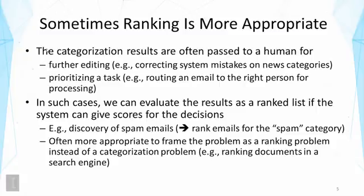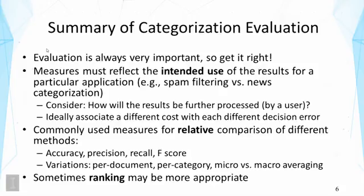To summarize categorization evaluation: first, evaluation is always very important for all these tasks — get it right, because if you don't you might get misleading results and be misled to believe one method is better than another when it's not. Measures must also reflect the intended use of the results for a particular application. For example, in spam filtering and news categorization, results are used in different ways, so we need to consider the difference and design measures appropriately.